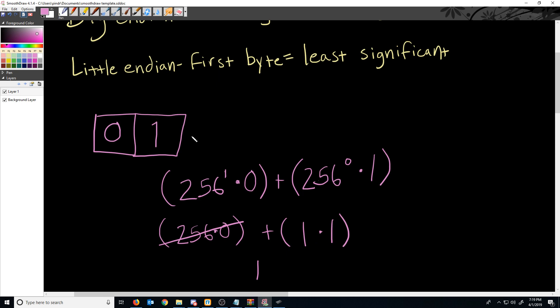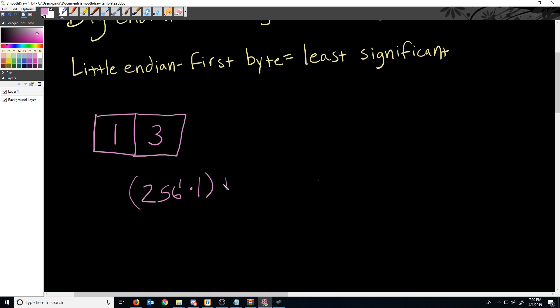Let's take a look at a couple more examples. So let's say that we have the bytes one and three, and we're still working in Big Endian. Well, if we want to figure out what integer this is, we could take 256 to the first power, multiplied by one, and then we can add 256 to the power of zero, multiplied by three.